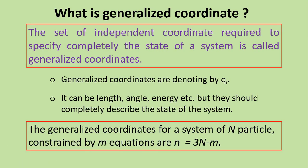From this concept comes the idea of a generalized coordinate. The definition of a generalized coordinate is: the set of independent coordinates required to completely specify the state of a system. We denote a generalized coordinate as Q_i, and if there are more than one, we write Q1, Q2, Q3, and so on. These generalized coordinates are not limited to X, Y, and Z — they can be lengths, angles, or energies — but the condition is that they must completely describe the state of the system.